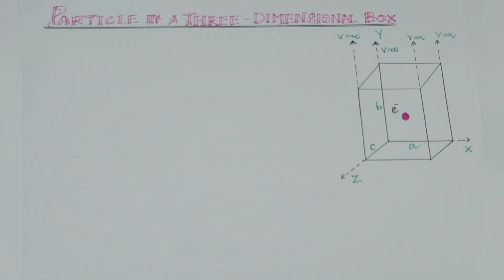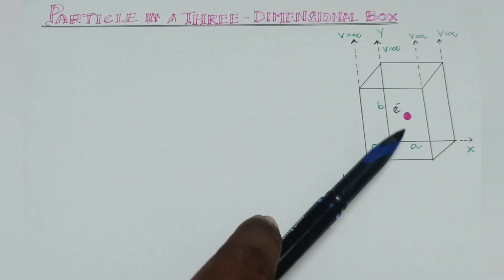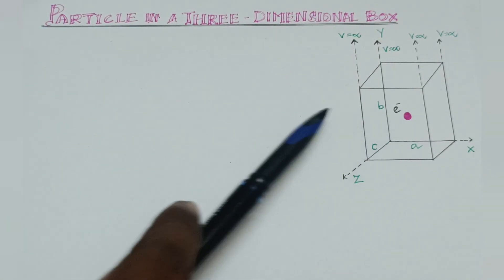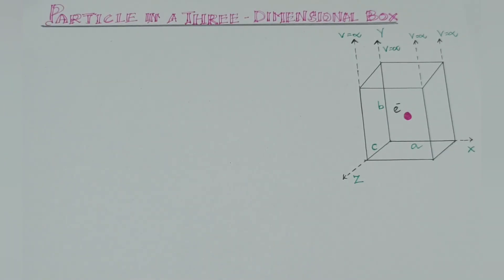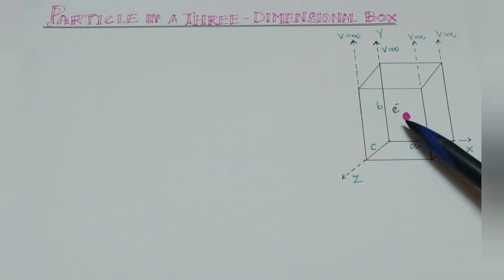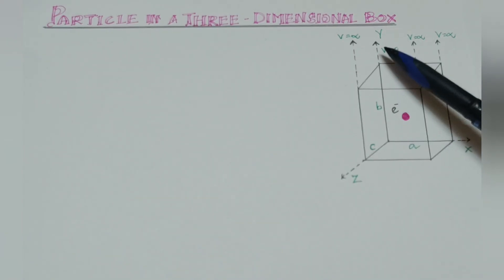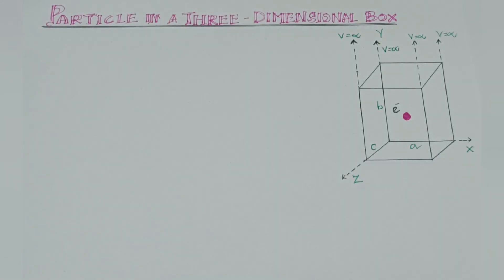Let us consider a potential box. Inside the potential box, the electrons move in all 3 directions — they move 3-dimensionally. They move in the x direction, the y direction, or the z direction.